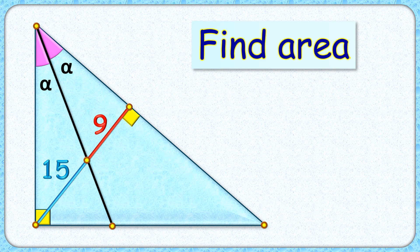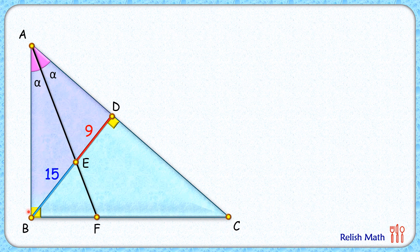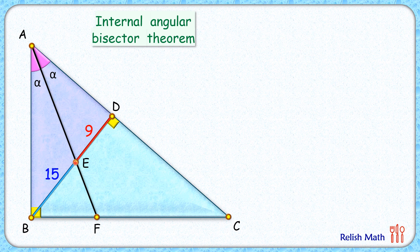Let's check the solution. We'll first consider triangle ABD. Here AE is the angular bisector. We'll apply the internal angular bisector theorem - that is, the ratio of side AB upon AD will be the same as BE upon DE. Here BE is 15, DE is 9, and AB upon AD equals 15 by 9. Simplifying, we get AB upon AD is 5 by 3.